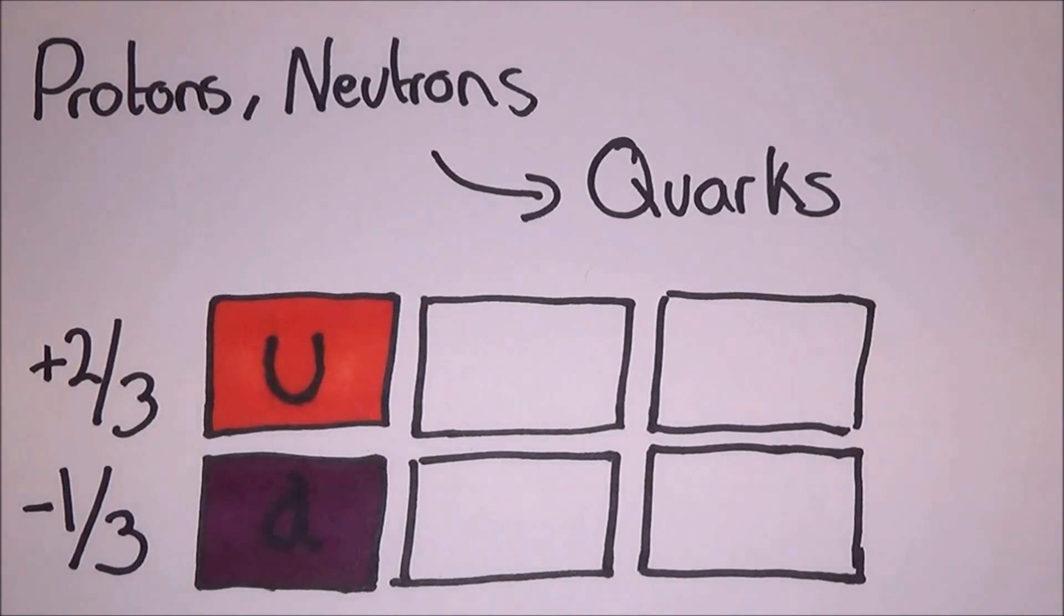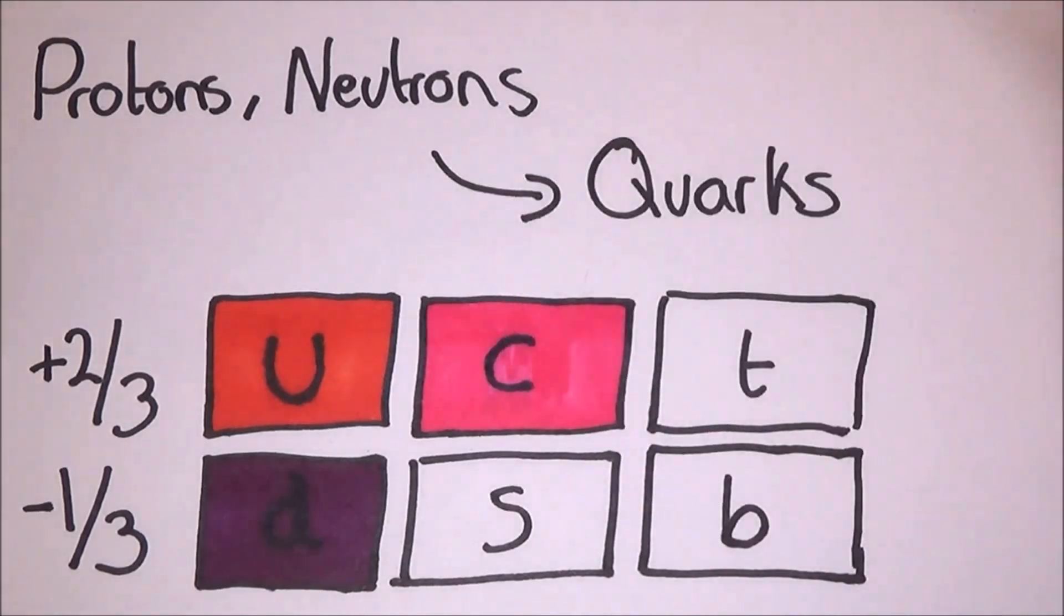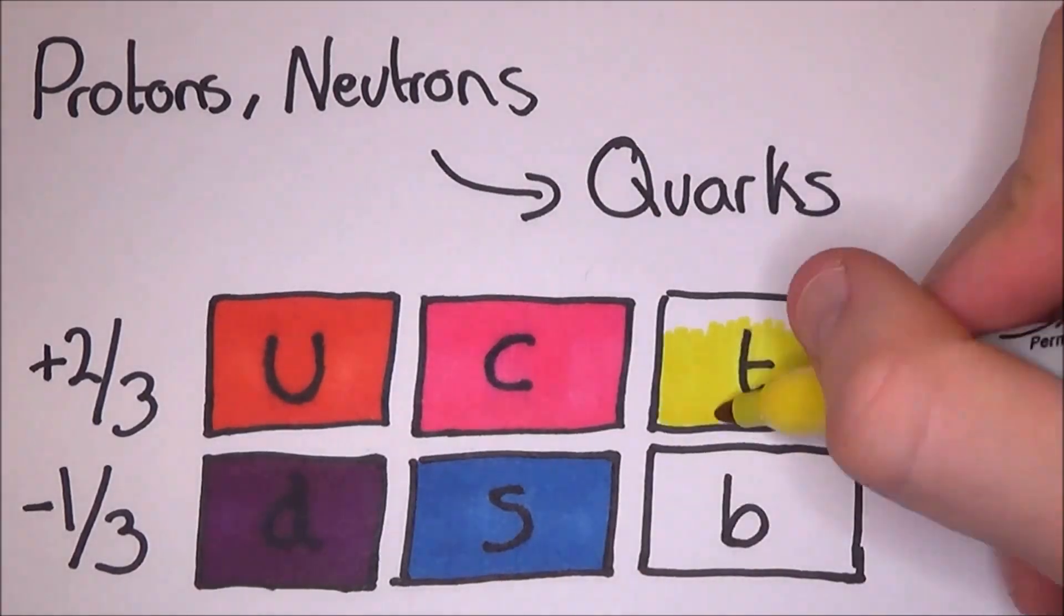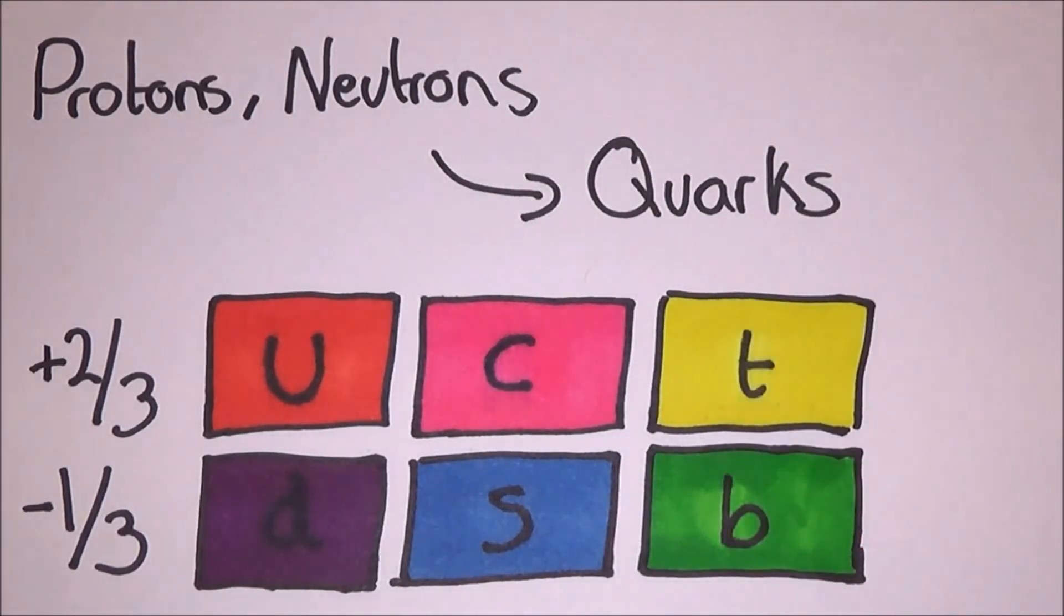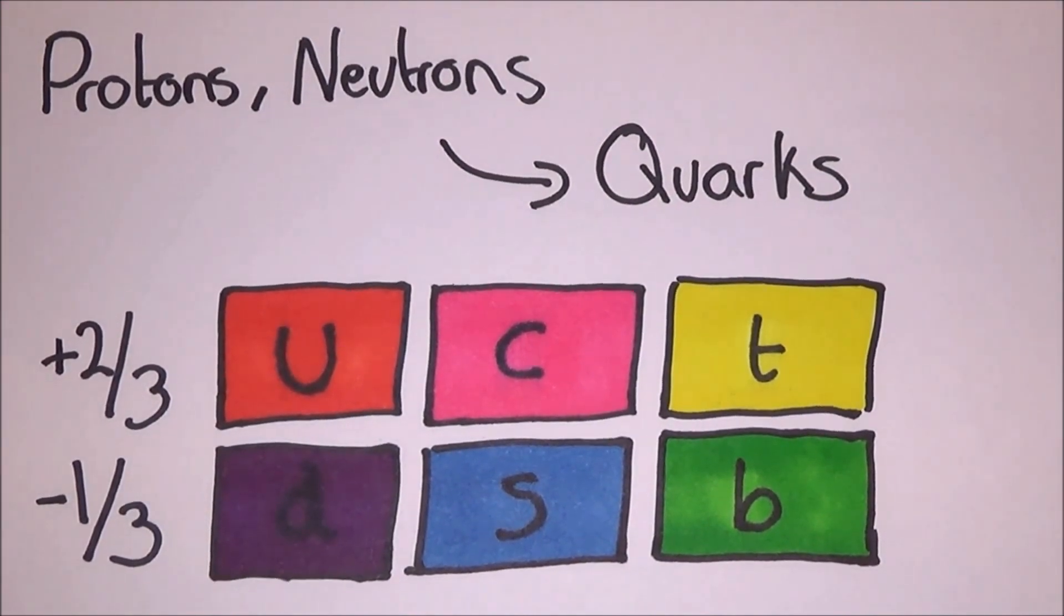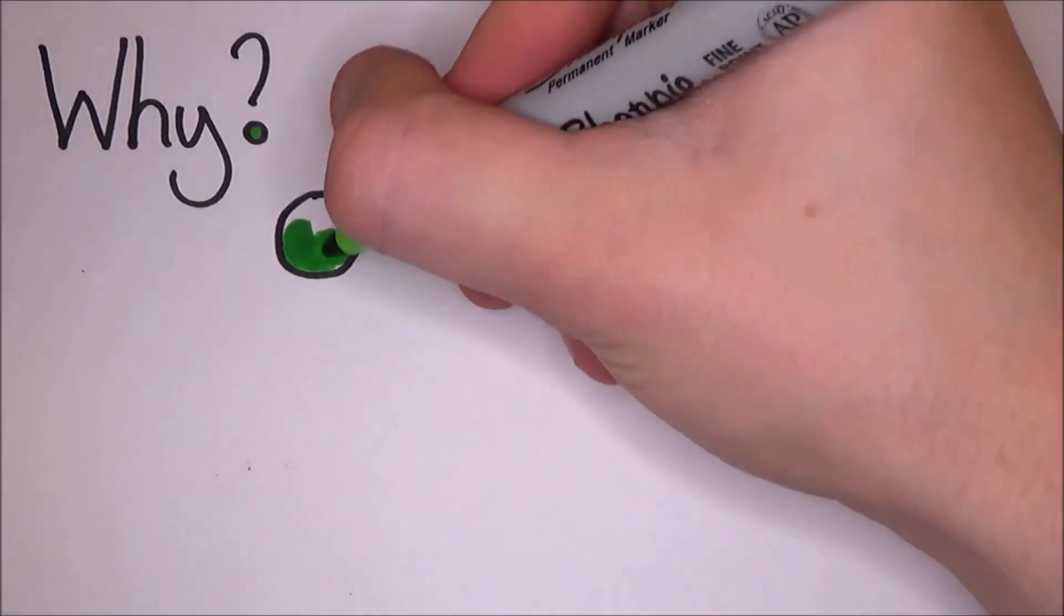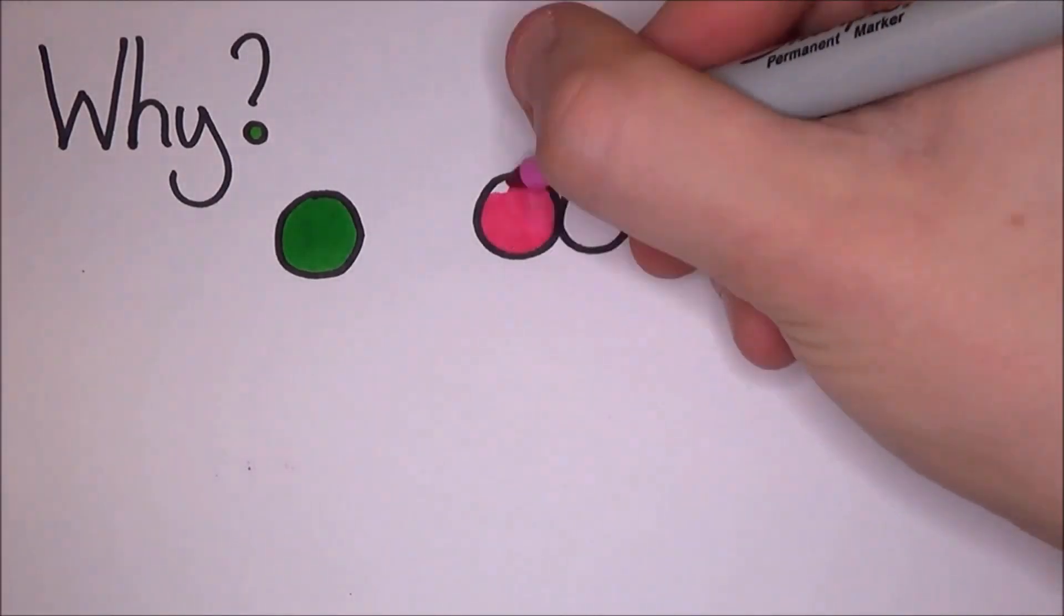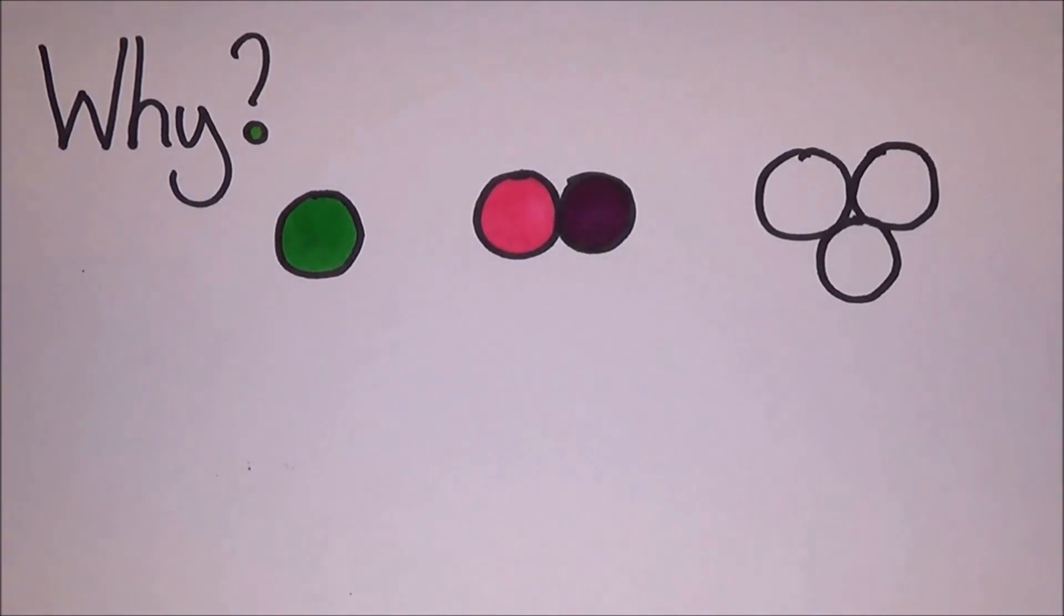The up-type quarks are up, charm and top, and all have a charge of plus two-thirds. While the down-type quarks are down, strange and bottom, which all have a charge of minus one-third. You see the massive contradiction? So why is it that particles have to have an integer charge while quarks can have fractions? It is because you can't get quarks to exist on their own. They are always found with at least one other quark to make a whole charge.